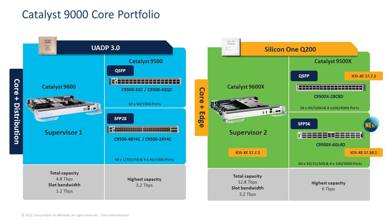Starting things off, let's take a look at the core portfolio as it stands today. On the Catalyst 9000 series, we have two different flavors of core switches. The first is powered by the UADP 3.0 ASIC — on the 9600 side we have the Supervisor Engine 1, and on the 9500 side we have the QSFP form factor 32C and 32QC models, and on the SFP side we have the 48Y4C and 24Y4C models.